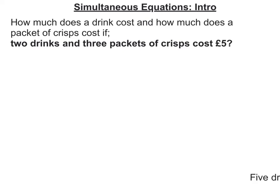In this video we're going to start looking at simultaneous equations. We've got a scenario where we know that two drinks and three packets of crisps cost five pounds, and it wants to know how much a drink costs and how much a packet of crisps costs. So I'm going to take this information and write it into a formula. D is the cost of a drink, so I've got 2D, plus C is the cost of a packet of crisps, so 3C equals five.